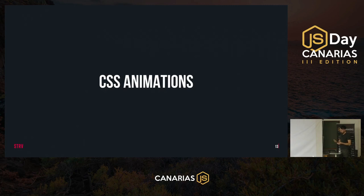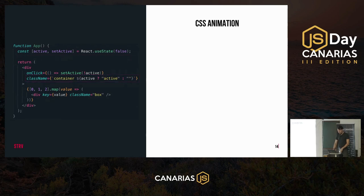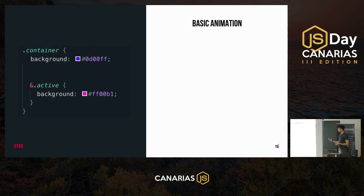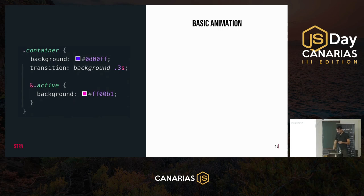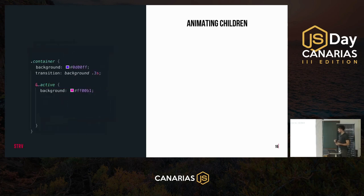Let's talk about the options we have when animating in React. We'll start with something simple: CSS animations. We have a sample component with a local state that tracks whether the component is active or not — just a boolean flag. We toggle an active class on the container div and render three child elements inside. To animate the background of the container, we define a new background color for when it has the active class, then use the transition property specifying the CSS property to animate and its duration.